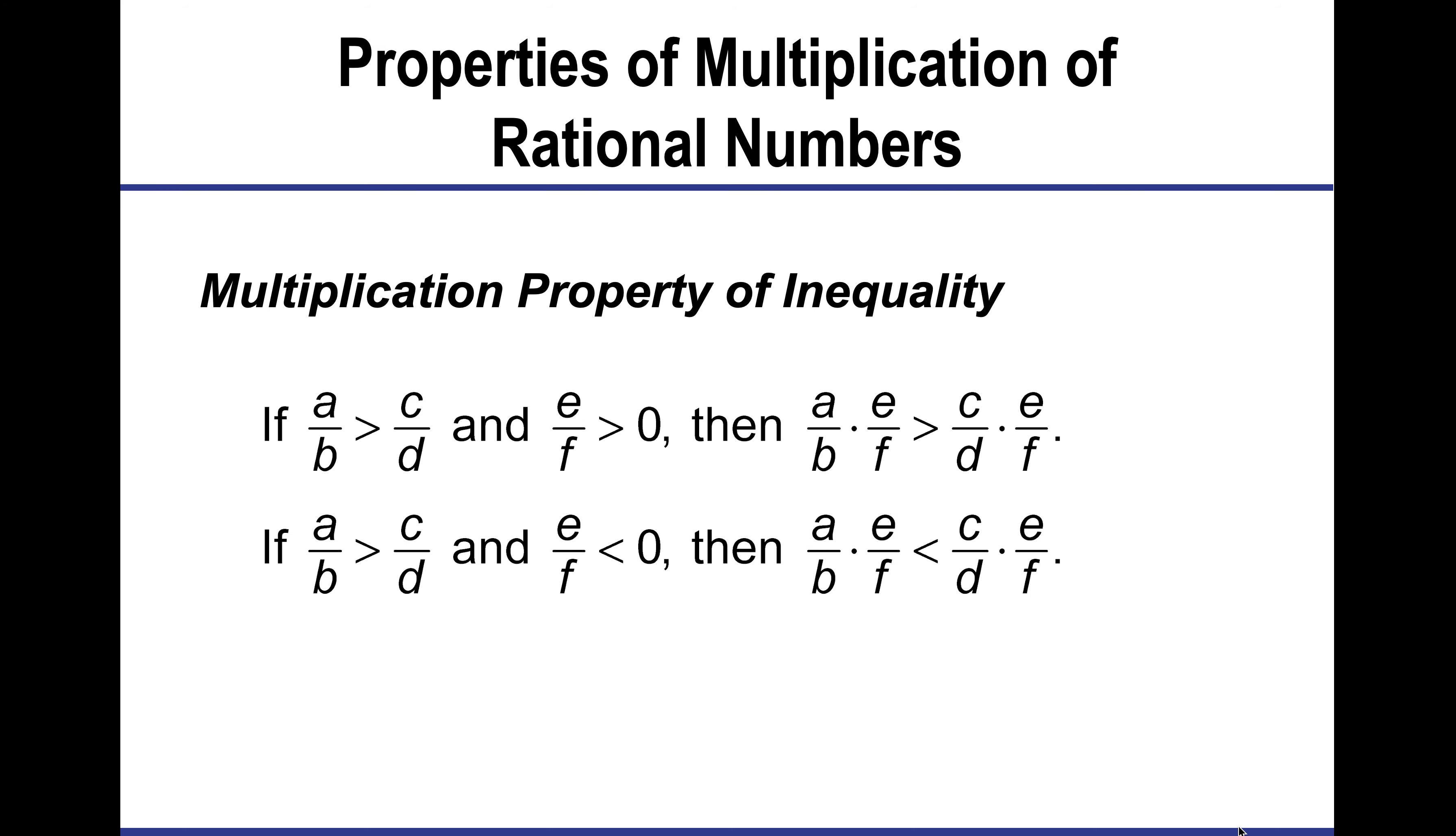In the multiplication property with inequalities, if I have two ratios being compared and I'm using a positive number, when I multiply both values by that, the sign is not going to change. So this is like if you have x over 2 is less than 5. If I multiply both sides by a positive value, I don't change the inequality sign. But in the second part, if I have u over f, which is less than 0 or negative, I am going to change the sign.